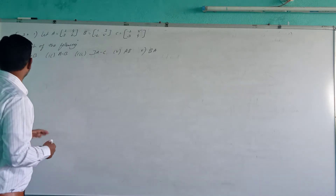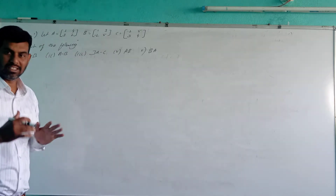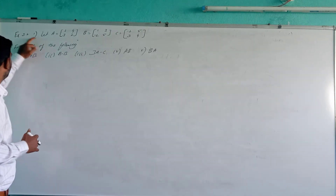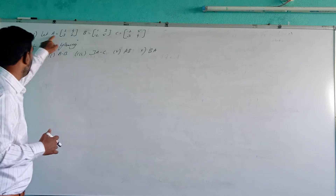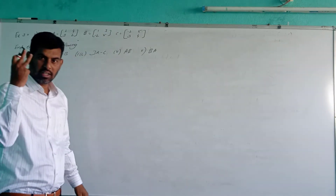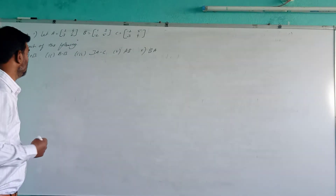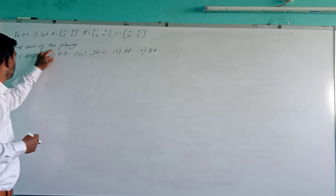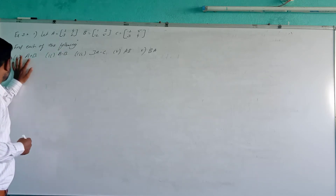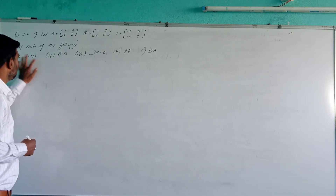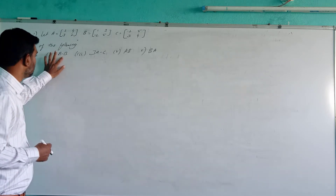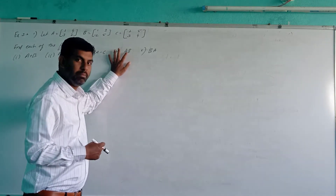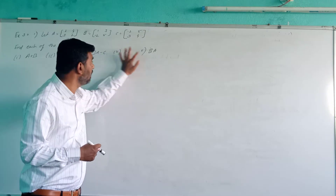Now we will come to Exercise 3.2. The first question: A, B, C are three matrices. Find each of the following — A plus B, A minus B, 3A minus C, matrix multiplication A·B, and B·A.